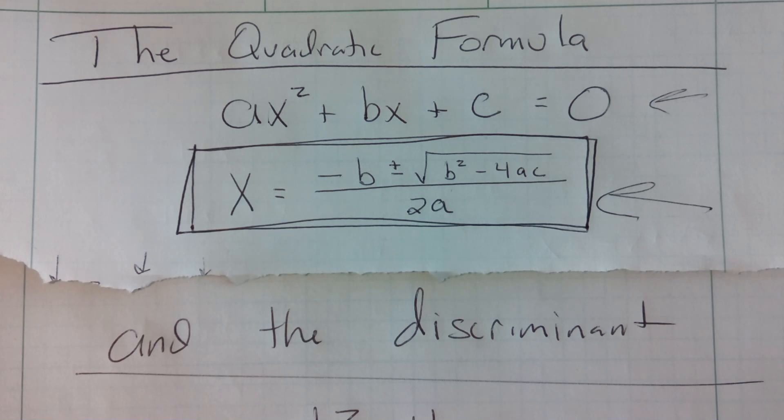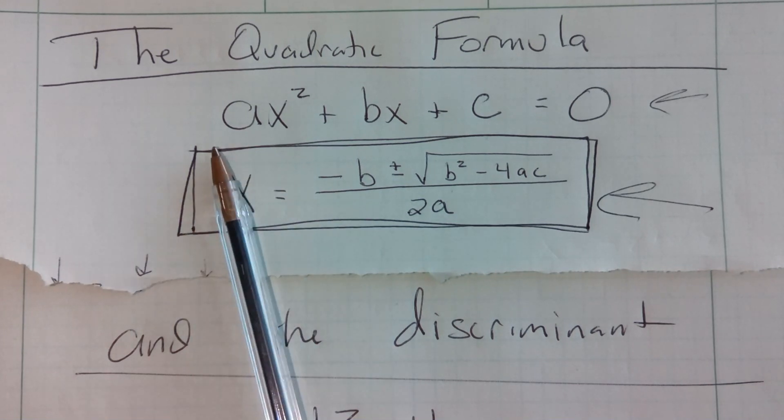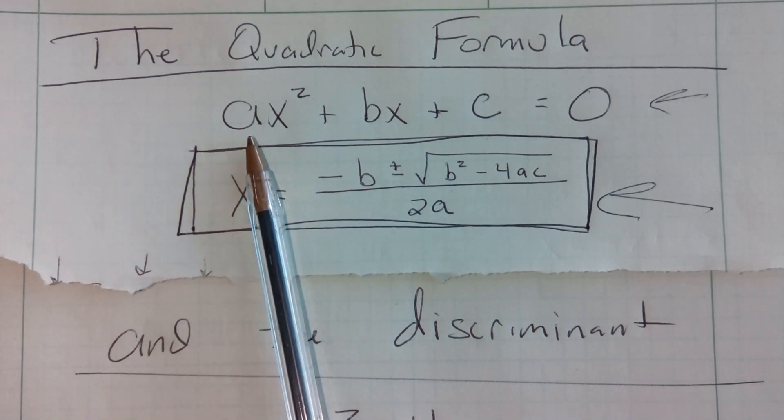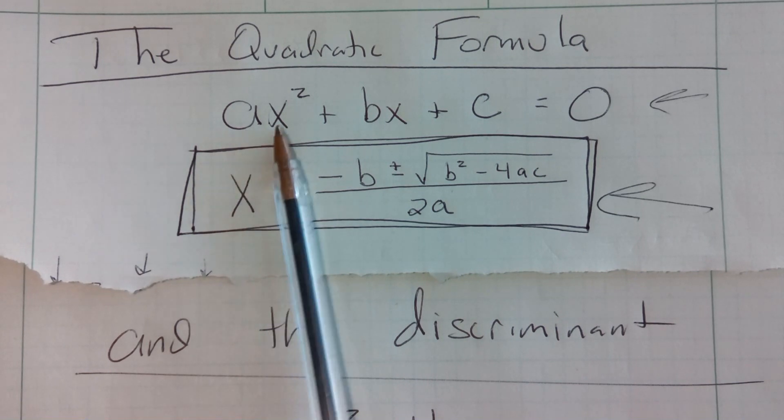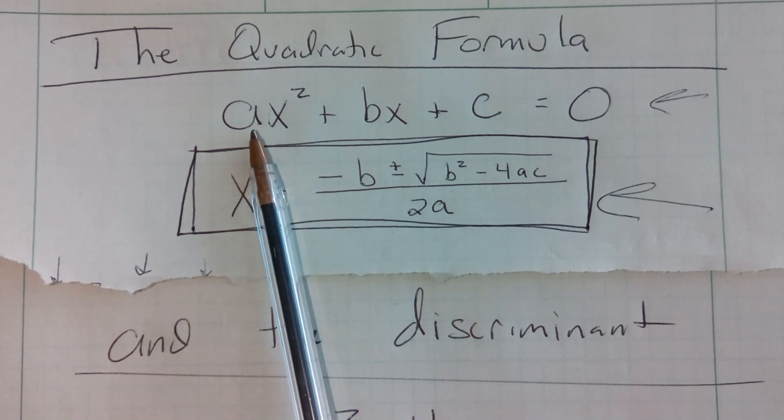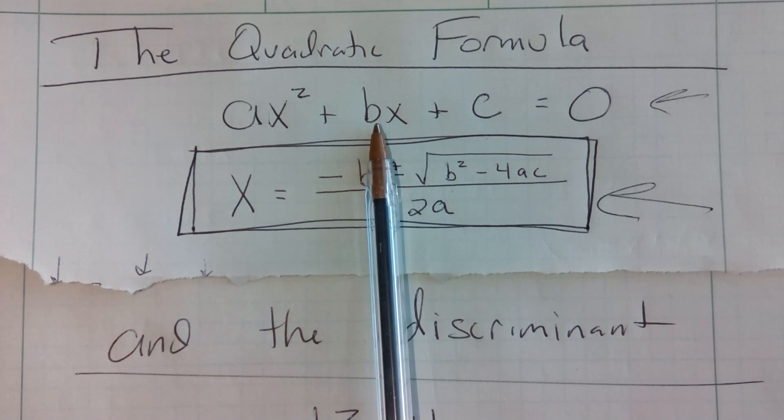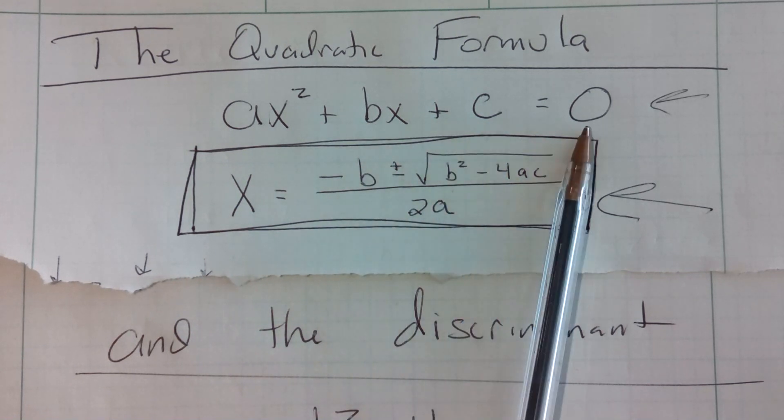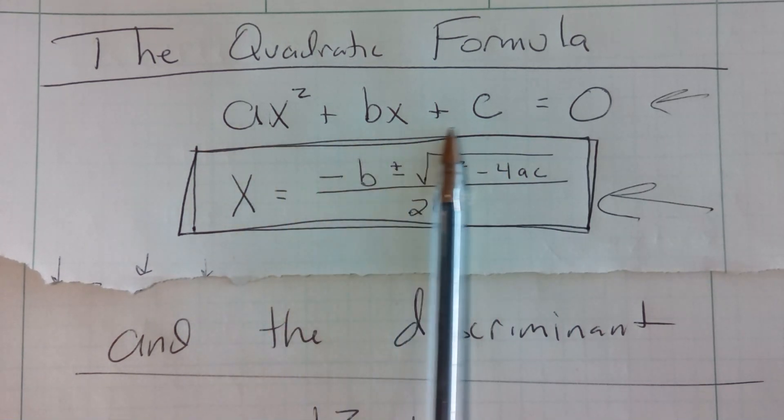Welcome. Today we're going to learn about the discriminant of the quadratic formula. Just as a refresher, we have a quadratic equation where we have an x-squared term with a coefficient, plus some x-term with a coefficient, plus some constant equals zero. ax-squared plus bx plus c equals zero.